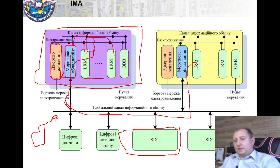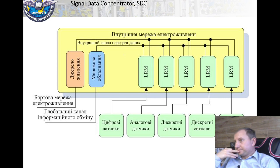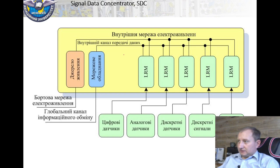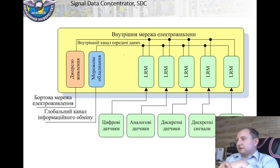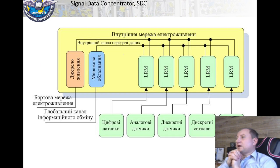A Signal Data Concentrator is another type of integrated rack. It is used to process raw data from sensors — it contains analog-to-digital converters and processors to process all input data and form a table of parameters. This table is then shared with all other resources on board. Thus the Signal Data Concentrator is one of the approaches for sharing sensor data across the avionics network.